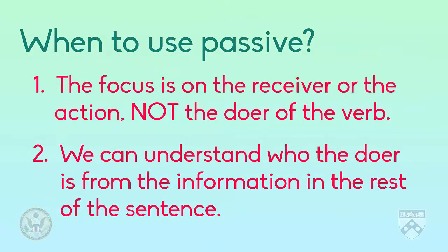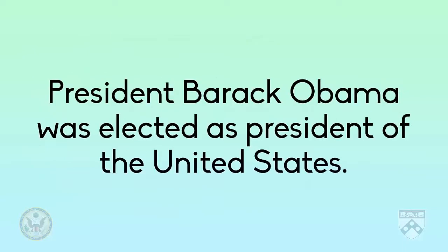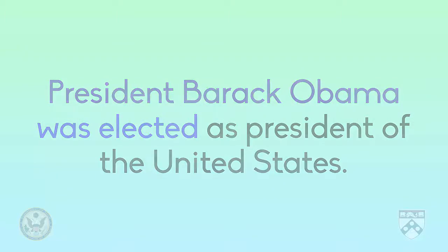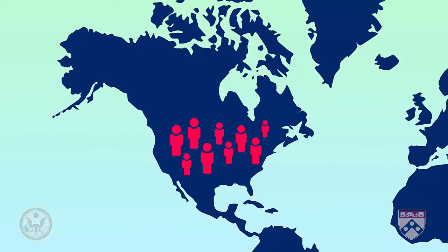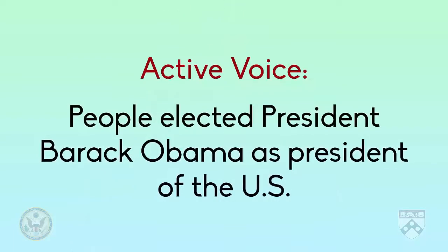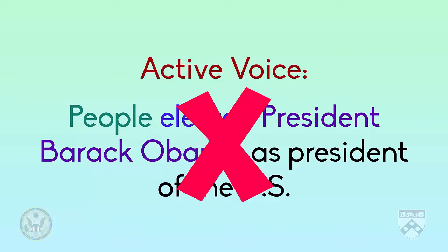A second reason you might use passive voice is if we can understand who the doer is from the information in the rest of the sentence, and therefore don't need to mention the doer at all. For example, Barack Obama was elected as President of the United States. Here, Barack Obama received the action of being elected. Who elected him? The doer of the verb is not identified in the sentence, but we know that citizens of the United States voted in the election, and that he won because of those votes. We wouldn't use active voice here — 'People elected Barack Obama as President of the United States' — because the doers are already understood from the sentence.